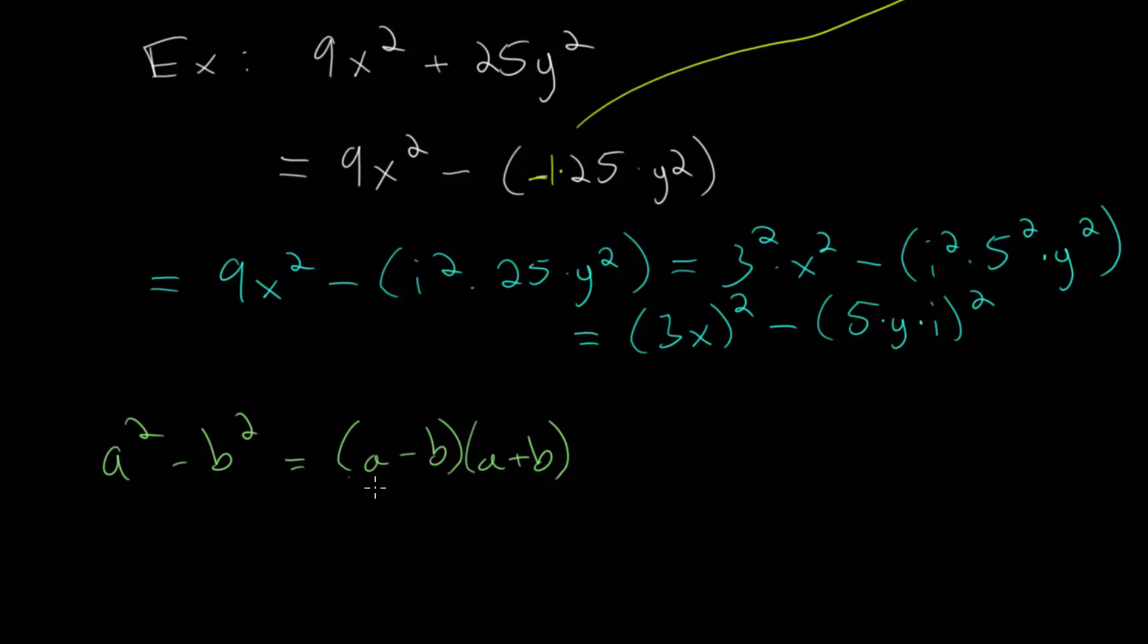It's the first number ignoring the square minus the second number ignoring the square, and then multiplied by that first number plus that second number, again ignoring the squares. And for this formula, we can write this as 3x, this first one ignoring the square, minus the second one ignoring the square. And I'll write the i first, so we have i multiplied by 5y. And then we have the first one plus the second one, again ignoring those squares.